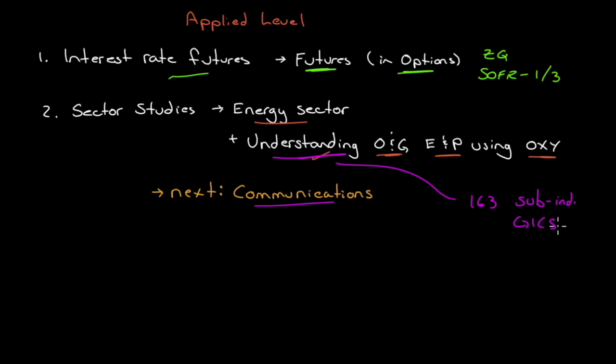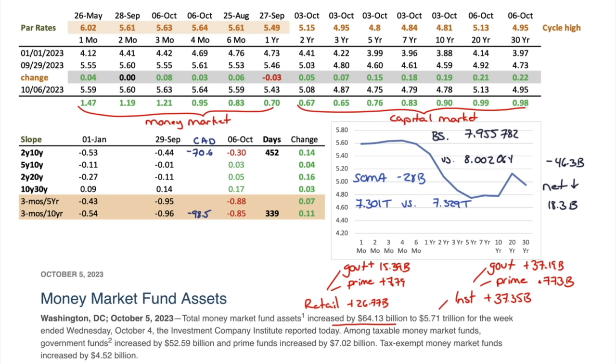The goal over the coming years is to have an understanding video on each of the 163 sub-industries in the GICS classification system — covering all 11 sectors.